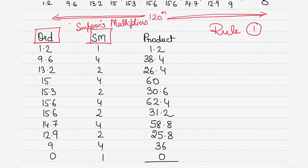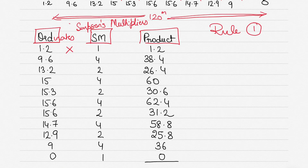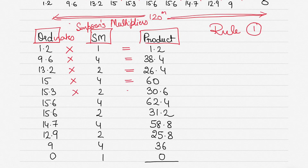SM stands for Simpson's Multipliers; OR stands for ordinates. The product is the ordinate multiplied by the Simpson's multiplier. For 11 ordinates, the Simpson's multipliers are: 1, 4, 2, 4, 2, 4, 2, 4, 2, 4, 1. You simply multiply each ordinate by its Simpson's multiplier to get the product — for example, 15 × 4 = 60, and 15.3 × 2 = 30.6.